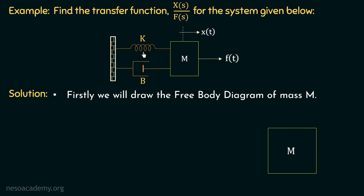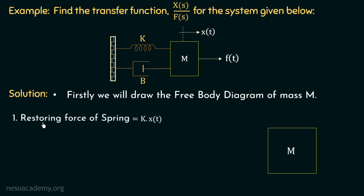The force of the spring will be directly proportional to the displacement x(t). So the first force is the restoring force of the spring, which will act to the left hand side, and it is equal to k multiplied with x(t). We know that the restoring force of a spring is k multiplied with the displacement, and the displacement in this system is x(t), so it will be equal to k multiplied with x(t).